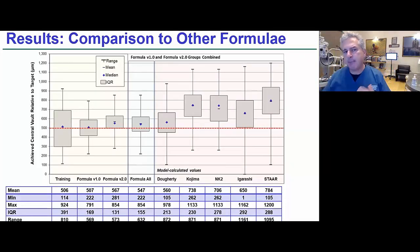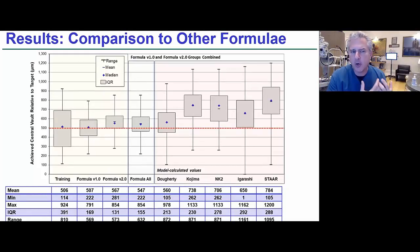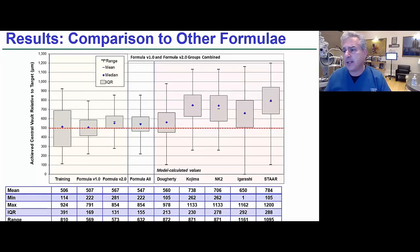What we then did was to back calculate, based on our model, what the vault would have been if we had used the lens suggested by any of the other formulas. Obviously, if it's the same lens as the one that we suggested, then that would have been the vault. And if it was a larger lens, it would have gone up by whatever our equation would have predicted that vault to be different. So this is a model, but it does show you that by and large, the STAAR formula tends to be a little bit high.